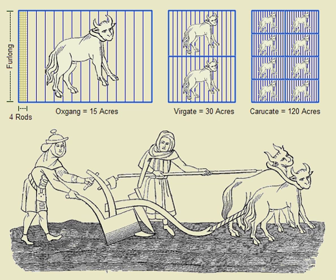Its exact value is based on an inch defined as established by the Mendenhall Order. Surveyors in the United States use both international and survey feet, and consequently both varieties of acre. Since the difference between the U.S. Survey Acre and International Acre is only about a quarter of the size of an A4 sheet of paper — 0.016 square metres, 160 square centimetres, or 24.8 square inches — it is usually not important which one is being discussed. Areas are seldom measured with sufficient accuracy for the different definitions to be detectable.